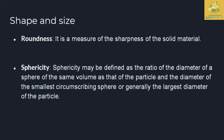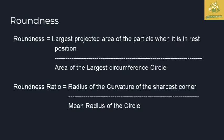For shape and size, the first property is roundness and the second is sphericity. Roundness is the measure of the sharpness of a solid material — it describes sharpness whether it has a smooth end or a rough end. Roundness is calculated as the largest projected area of a particle in its resting position divided by the area of the largest circumscribed circle. Roundness ratio is the radius of curvature of the sharpest corner divided by the mean radius of the circle.